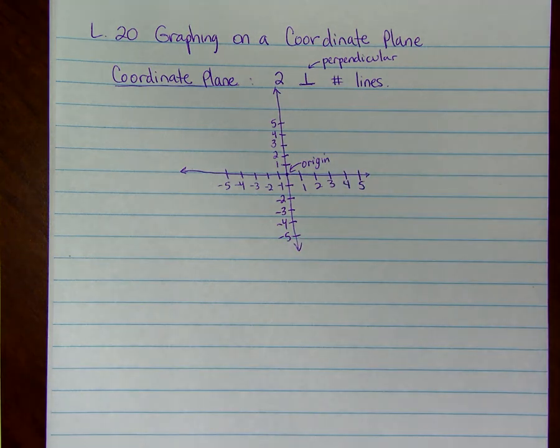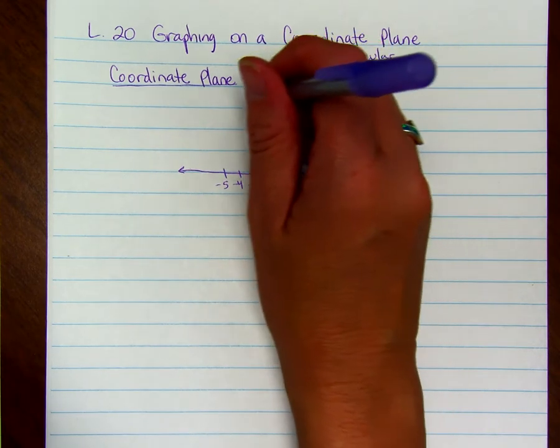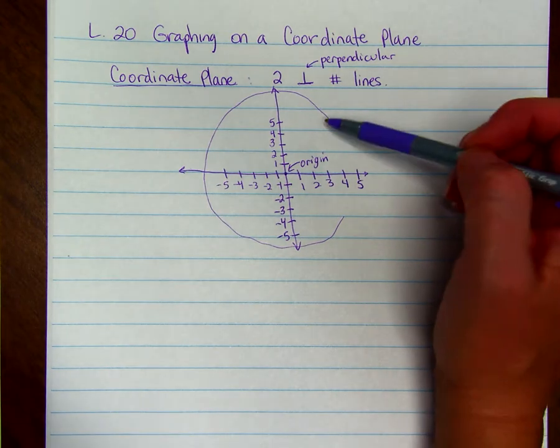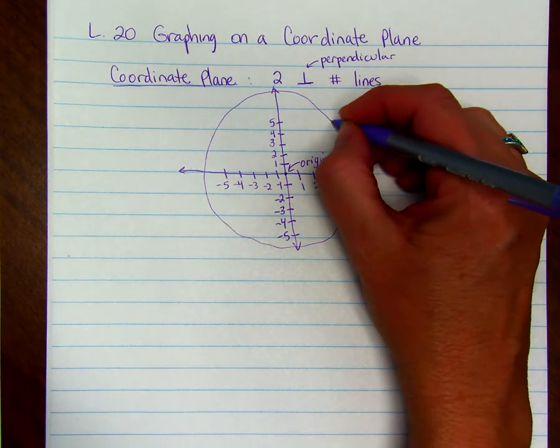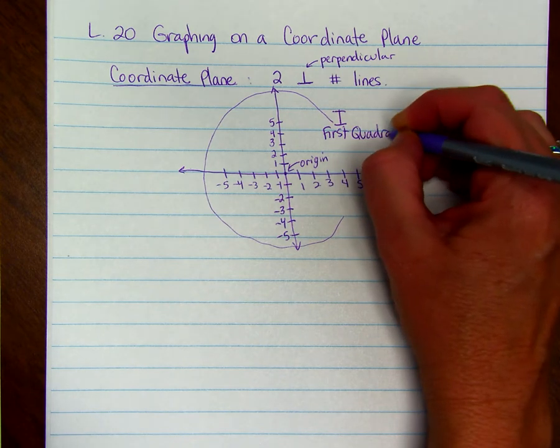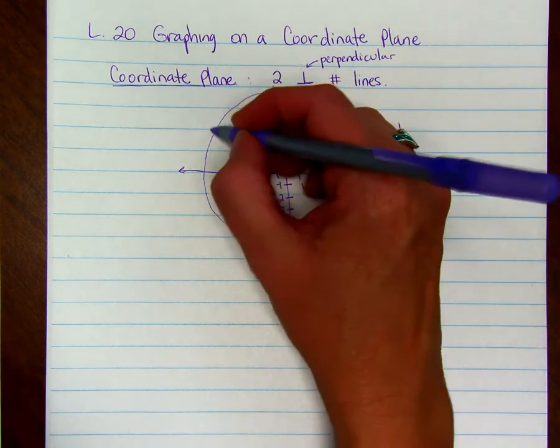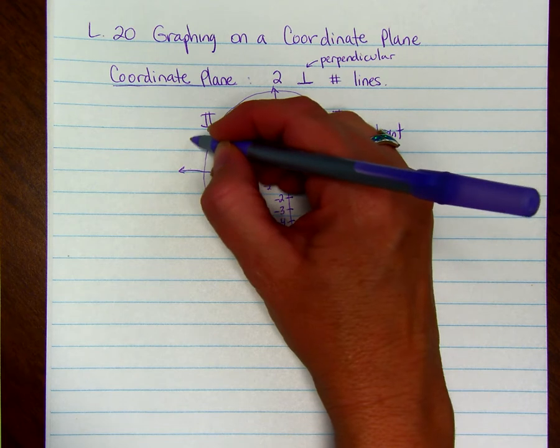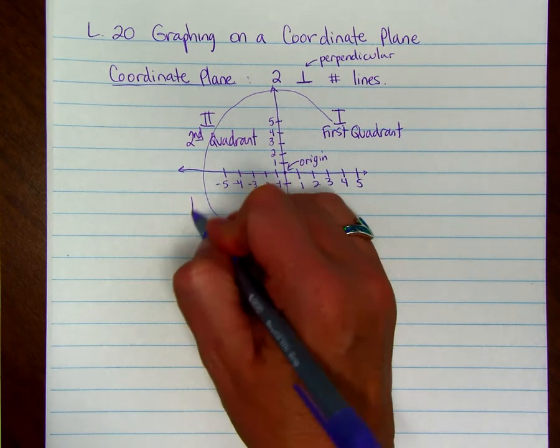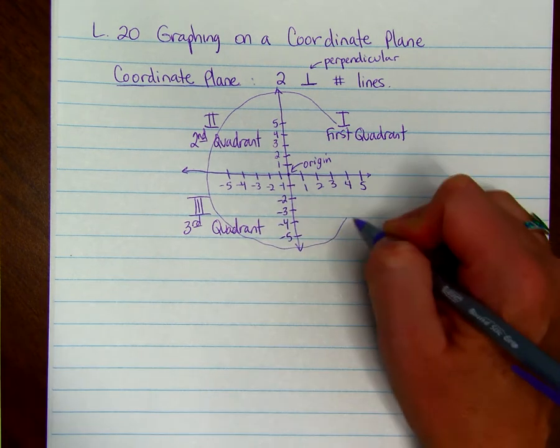If you think of a giant C for coordinate plane, you start here and you go around. This divides into four quadrants. So this one where we started our C is the first quadrant, and we just use a Roman numeral one. And then as we come around, this one's the second quadrant. Keep going, this one will be the third, and the very last one then is the fourth.